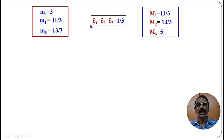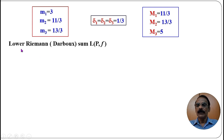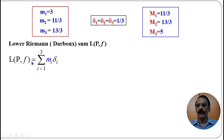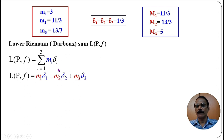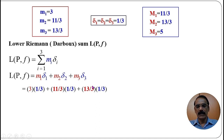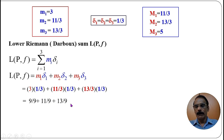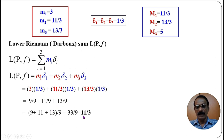Now we find the lower Riemann sum L(P, f) = Σ(i=1 to 3) mᵢ · δᵢ. Substituting m₁ = 3, m₂ = 11/3, m₃ = 13/3 and δ₁ = δ₂ = δ₃ = 1/3: we get 3·(1/3) + (11/3)·(1/3) + (13/3)·(1/3) = 9/9 + 11/9 + 13/9. Taking 1/9 as a common factor: (9 + 11 + 13)/9 = 33/9 = 11/3.